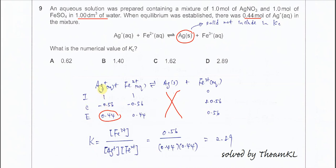If the silver ion is minus 0.56, iron(II) also needs to minus 0.56, so at the end it will also be 0.44.